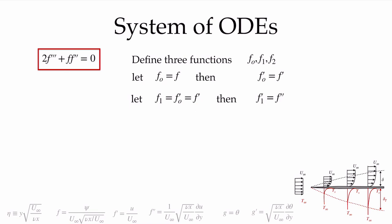Continuing the same pattern, f2 equals the derivative of f1, which is f double prime, so f2 prime is the third derivative of f. Fortunately, we can close the system using the governing equation. We can solve for f triple prime in terms of f and f double prime: f triple prime equals minus f times f double prime divided by 2.